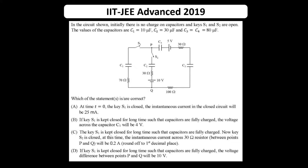Hello dear friends, let's see this question from IIT JEE Advanced 2090. It is a multiple choice question. A circuit is given with a battery, capacitor, resistor, and switches. Initially there are no charges on the capacitor and both switches S1 and S2 are open. The values of the capacitors are given, and we have to tell which options are correct — there can be more than one correct option. Let's check each option one by one.